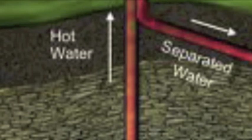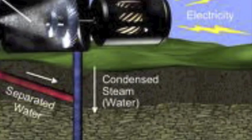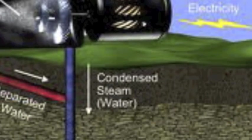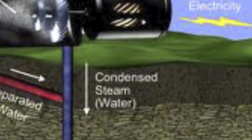The hot water from the reservoir is piped into a separator which separates the liquid from the steam. The force of the steam makes the turbine spin, which creates energy. The steam then condenses with the water and is piped back into the reservoir.